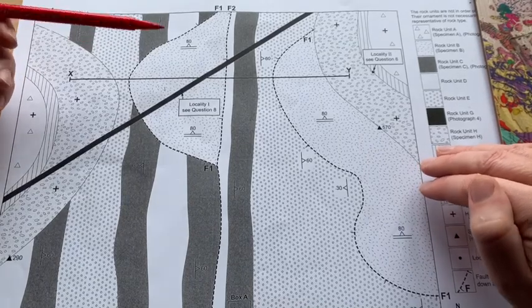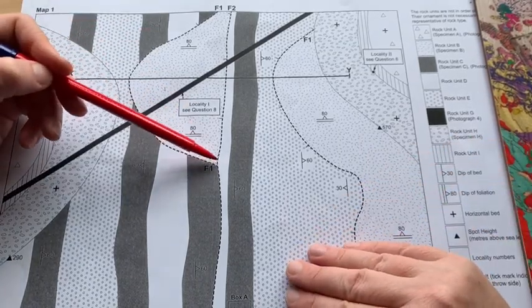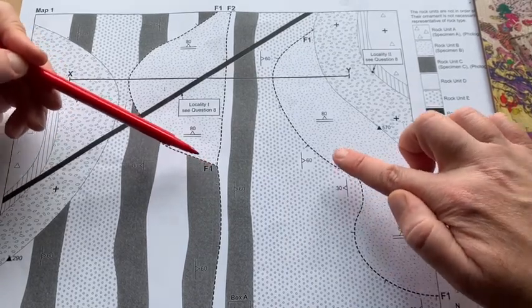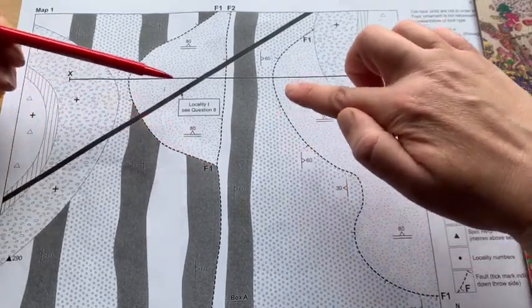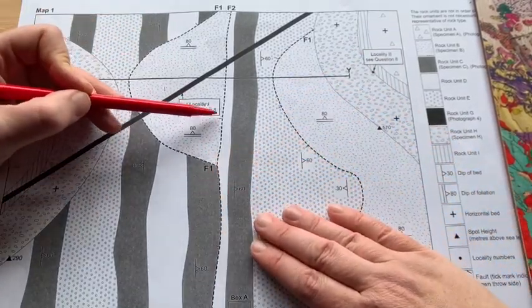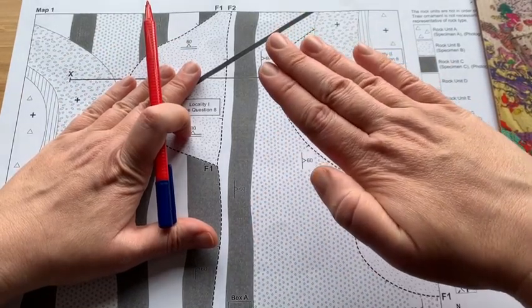Looking at the age relationships, F2 cuts across F1 and it's displaced it. So F1 would have had is the same fault, but F2 has displaced it. And these little marks here tell us that this side has moved down relative to this side.